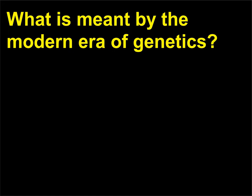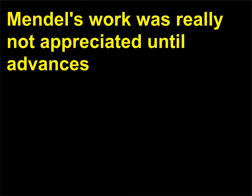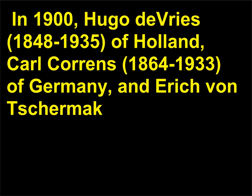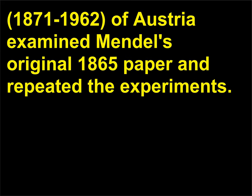What is meant by the modern era of genetics? Mendel's work was really not appreciated until advances in cytology enabled scientists to better study cells. In 1900, Hugo de Vries (1848–1935) of Holland, Karl Correns (1864–1933) of Germany, and Erich von Tschermak (1871–1962) of Austria examined Mendel's original 1865 paper and repeated the experiments.